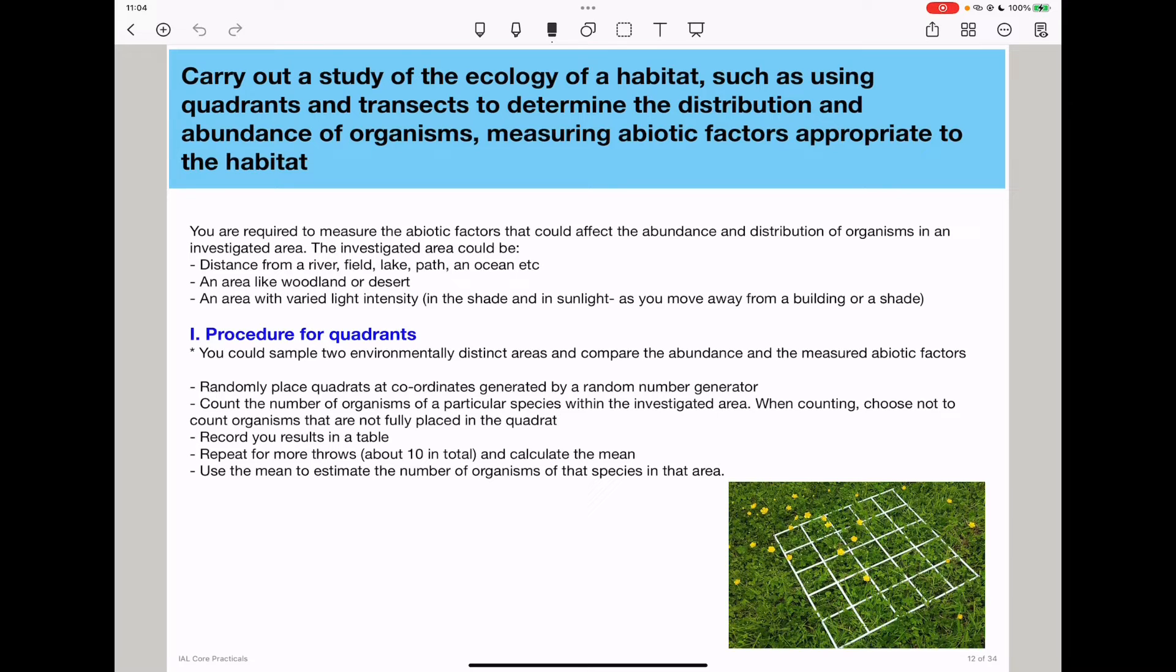Then you will record your results in a suitable table and repeat that same experiment with at least 10 more throws of the quadrats randomly, then calculate the mean number and tabulate the mean as well. Then you will find out an estimation of the number of organisms within a specific area by using the mean you have calculated.